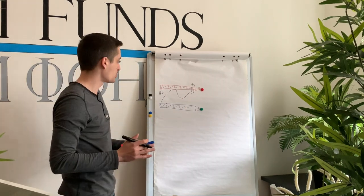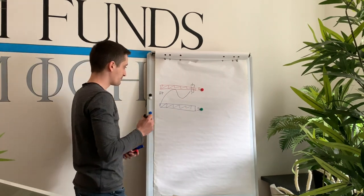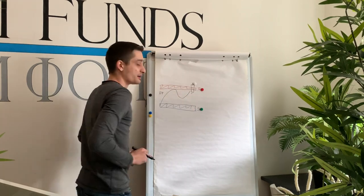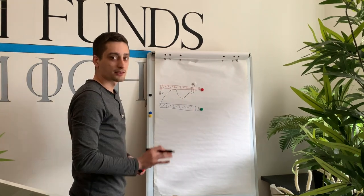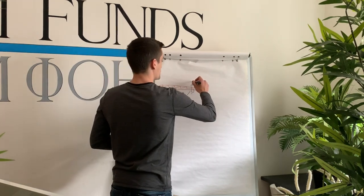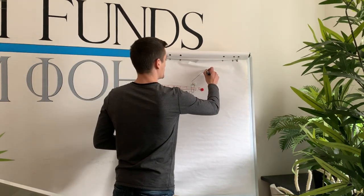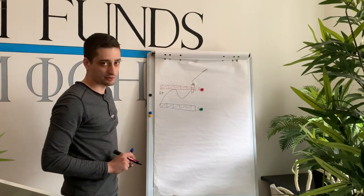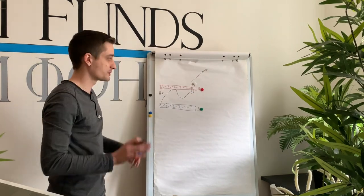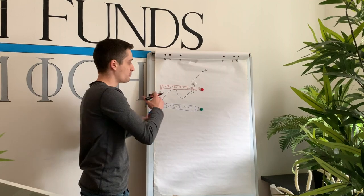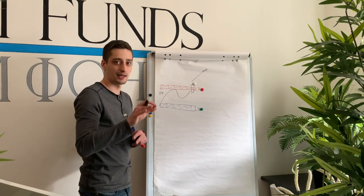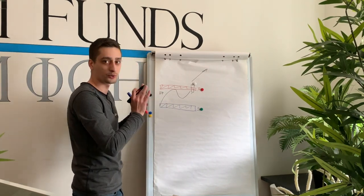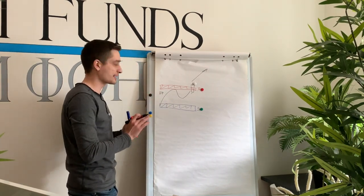This is what a breakout is called. From that point, we expect the price to continue further up. So we can take advantage of that, but we are going to talk a bit more about it later on a real graph. For now, I'm just showing you what the breakout is. It's similar with the support — the candle has to close below the support zone.